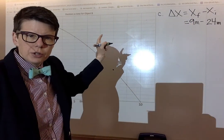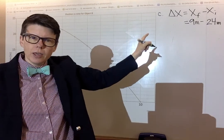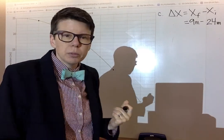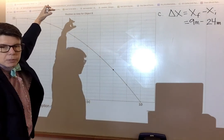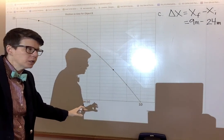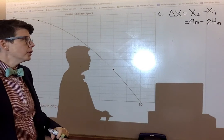The difference between those two numbers in that order is the displacement. Please note that the displacement of this object is negative. You can see that because on this graph the object is moving from a large positive number towards zero.